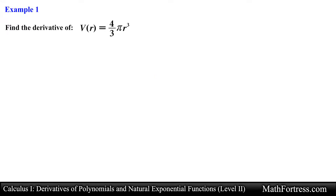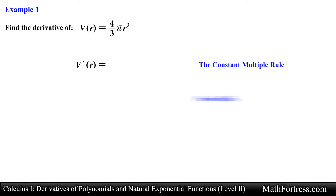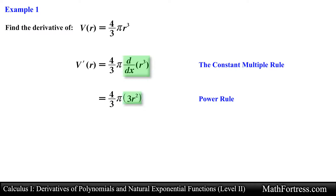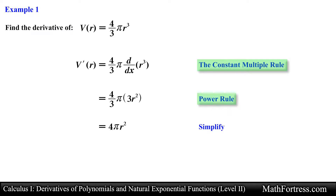Find the derivative of v as a function of r, where v = (4/3)πr³. Notice that this function has the constant (4/3)π and a power function of degree 3. To find the derivative we use the Constant Multiple Rule and the Power Rule. We first separate the constant and multiply it by the derivative of r³. Applying the Power Rule gives 3r². Simplifying, the 3's cancel, resulting in the final answer 4πr².